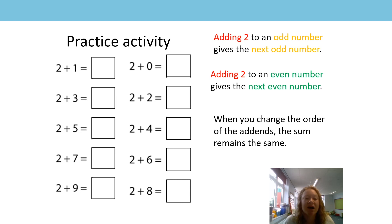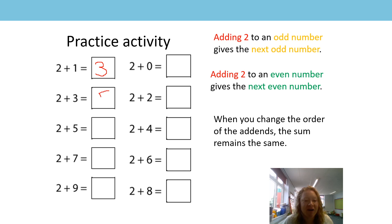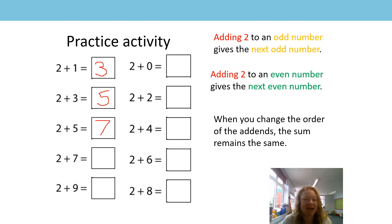So instead of two add one, I'm going to think: one add two gives me the next odd number — three. Well done! Two add three: think three and two more will be five. The next one, two add five: if I start on five, it'll be the next odd number — seven. Well done. And then two add seven: seven in my head, the next odd number will be nine.